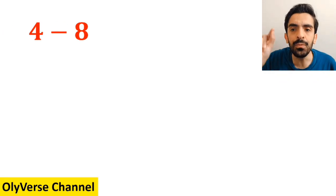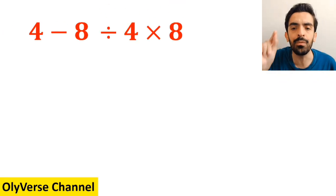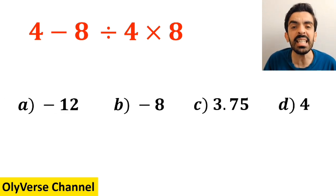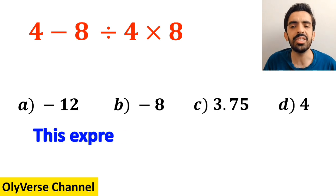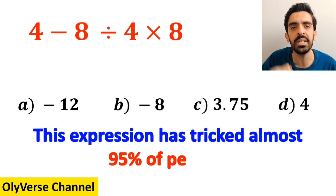What is the value of the expression 4 minus 8 divided by 4 then times 8? Which option do you think is the correct answer to this question? This expression has tricked almost 95% of people.